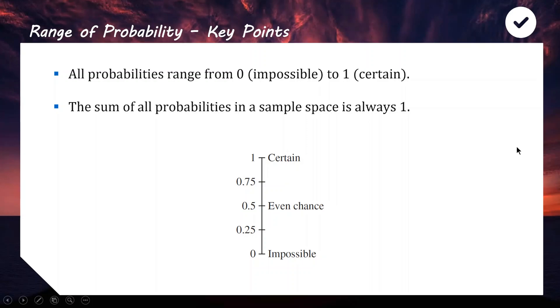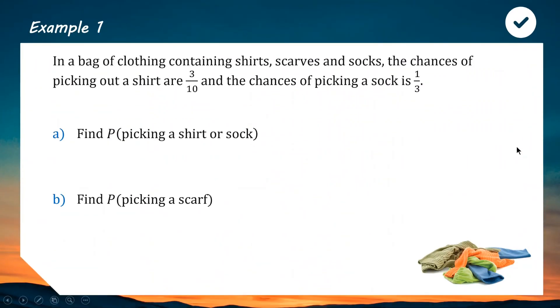We're going to apply this with our first example. We have a bag of clothing containing shirts, scarves, and socks. So we've got 3 outcomes. The chances of picking out a shirt are 3 in 10, and the chances of picking out a sock is 1 in 3. Find the probability of picking a shirt or a sock.